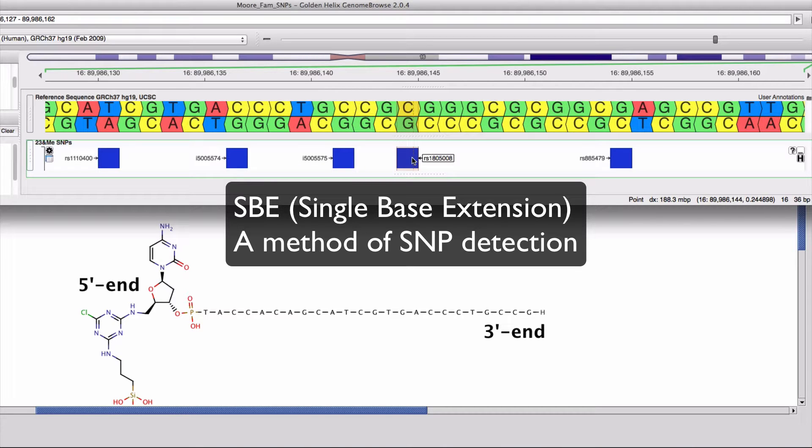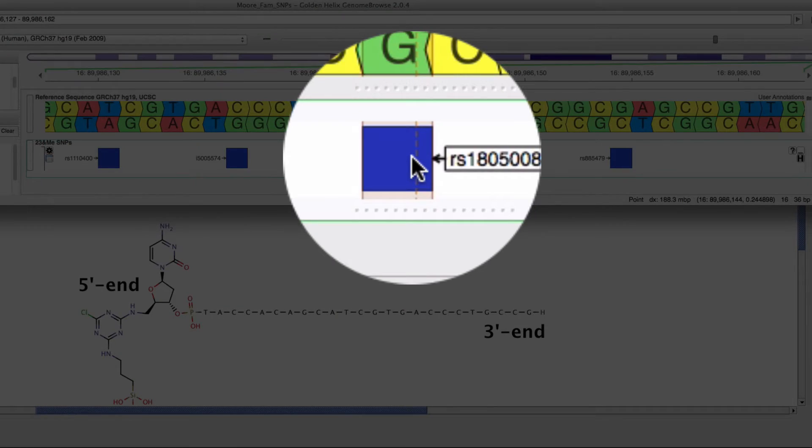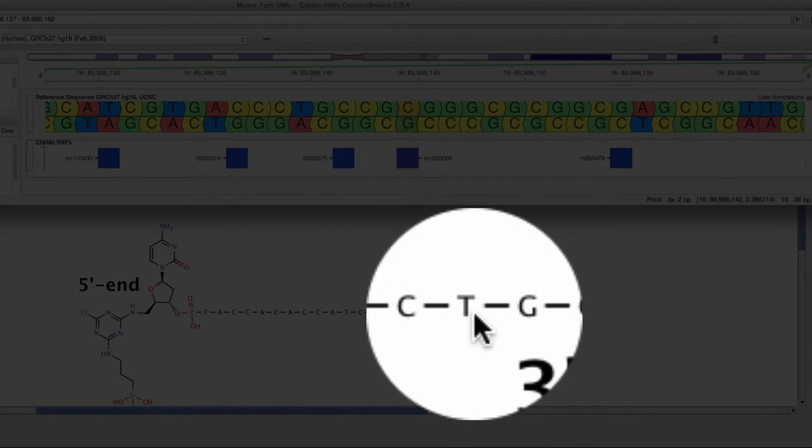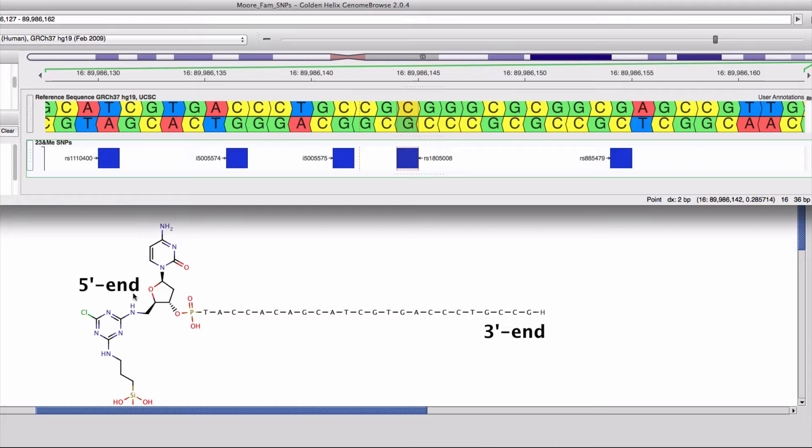Let's illustrate the SBE single base extension method of SNP detection using the SNP that's shown here. The browser shows the reference sequence. The sense sequence is on top, and that matches what's attached to the microbead, the probe sequence.